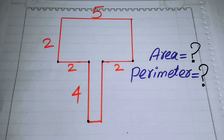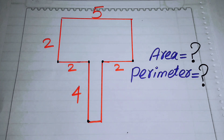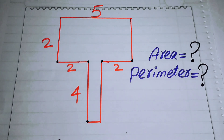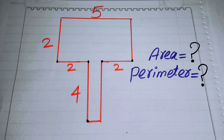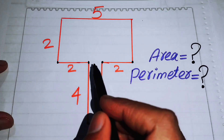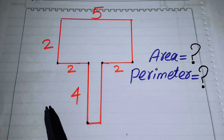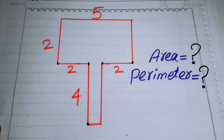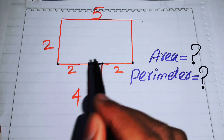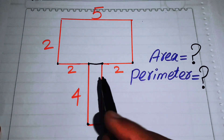Now we move on to find the area and perimeter. The perimeter is the sum of the lengths of all sides of the shape. To find it, we first find missing side lengths, then we split this shape into two rectangles by joining two points with a line.